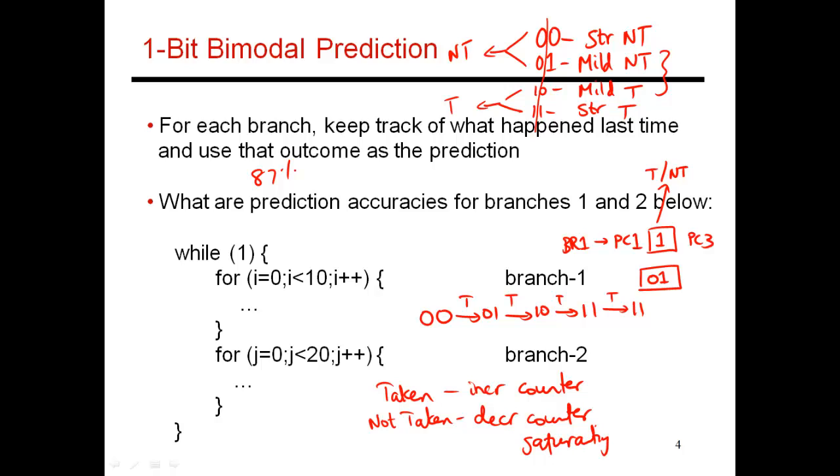So this is called a saturating 2-bit counter. And why exactly does this help me? So let's say that the branch was taken a whole bunch of times, it is now at 1,1. Now for some reason the branch decides that the branch is not taken once. Accordingly I have to decrement my counter and it becomes 1,0. So the next time I encounter this branch what prediction am I going to make? I'm going to look at the most significant bit, and that is still a 1. So I'm going to predict taken.